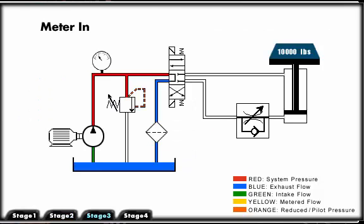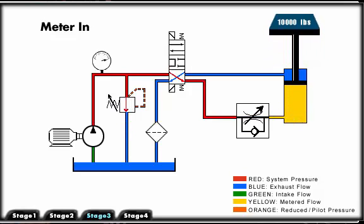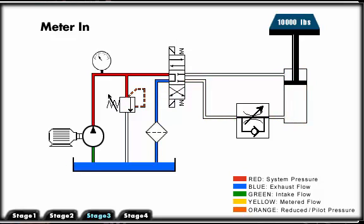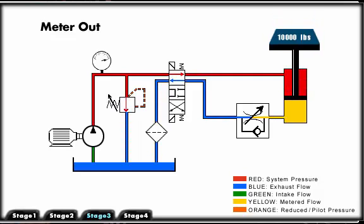Although meter in is usually the best placement for controlling a constant speed because it also dampens flow and pressure transients, it may be required in some applications to meter out. To meter out, we simply change the direction that the flow is allowed to pass through the reverse check. This will cause the fluid to be metered as it leaves the actuator, which is opposite of meter in.